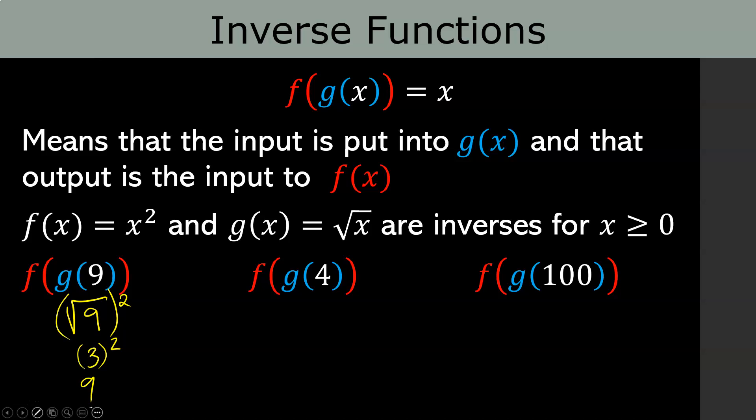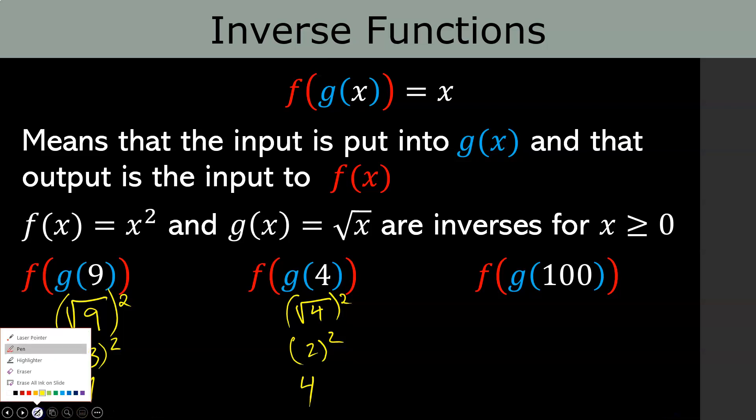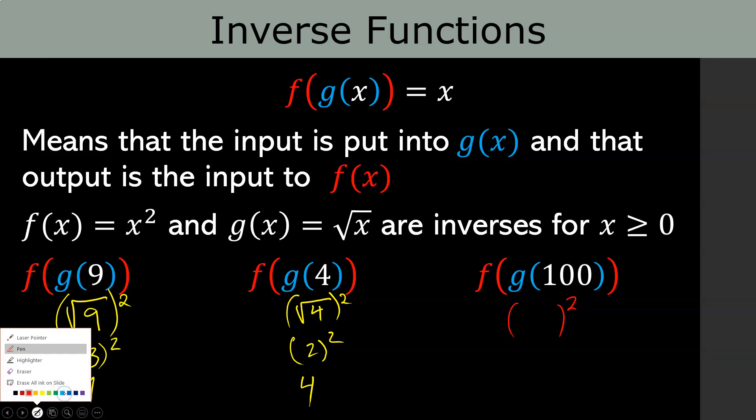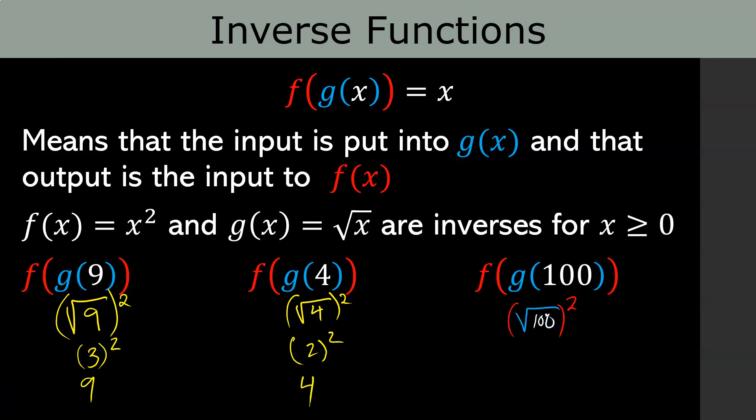So let's check this out with f(g(4)). g is the square root function, so we'll take the square root of 4. f is the squaring function, so we'll square and we get 2 squared is the 4 we started with. And then f(g(100))—first we do the square root of 100, which is 10, and then we have to square to get 100, or at least the same thing we started with. So that's what we mean by f(g(x)) = x. The output to g is put back into f, and we get the x value we started with.